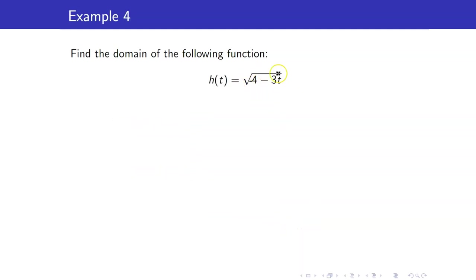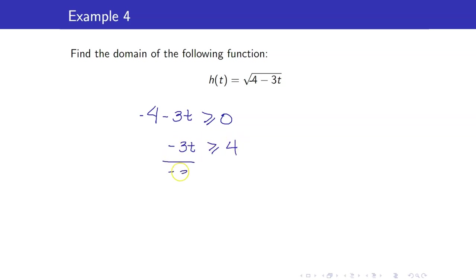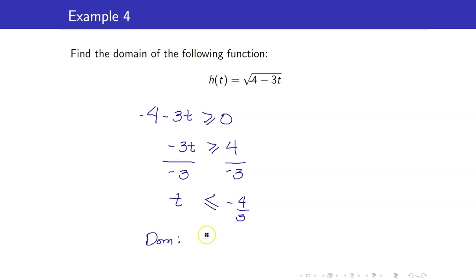What about this one? We have a radical of even index, so we set the expression inside the radical sign to be greater than or equal to 0. We have negative 3t greater than or equal to 4. Dividing both sides by negative 3 — since that is a negative number, the inequality sign flips. The only possible inputs are numbers less than or equal to negative 4 thirds. In interval notation, we write that as negative infinity to negative 4 thirds, with a closed bracket.